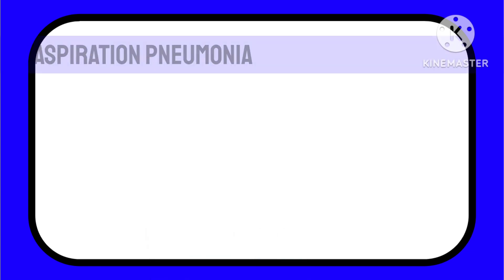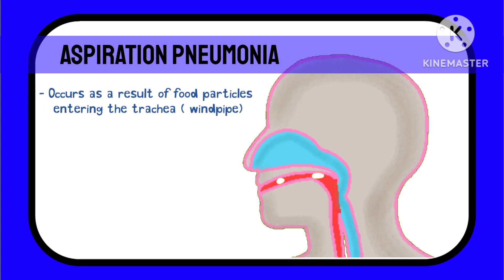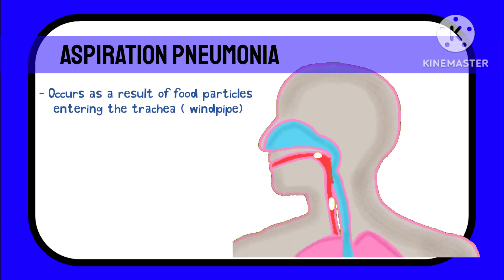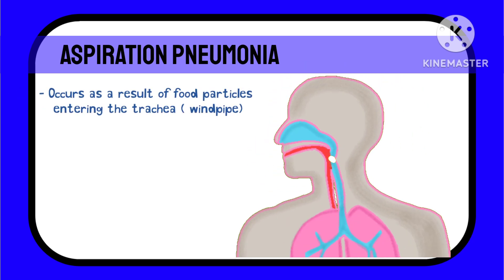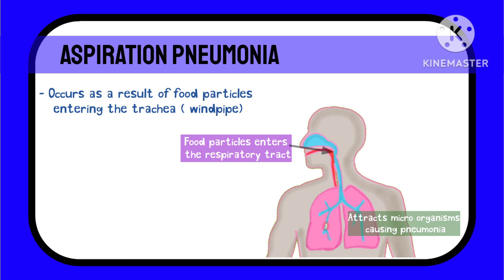Let's move on to the next two pneumonias, though they are sometimes associated with hospital acquired pneumonia. Aspiration pneumonia, as the name suggests, occurs as a result of aspiration of stomach content into the respiratory tract — food particles enter the lungs and attract microorganisms, causing pneumonia. Aspiration may occur at home or in a hospital setting, but the treatment of both remains the same.